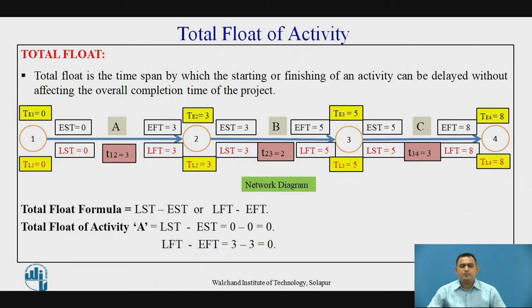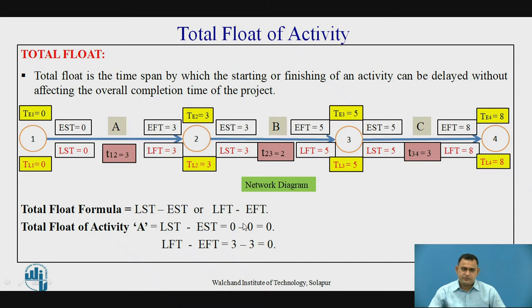Now let's see them one by one. Total float is the time span available with the activity by which the particular activity can be delayed without affecting the overall project duration. The formula for total float is: latest starting time minus earliest starting time, or latest finishing time minus earliest finishing time.